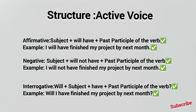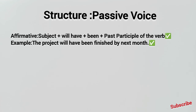Now for passive voice, the first structure is: subject plus 'will have been' plus past participle of the verb. For example: 'The project will have been finished by next month.' Here, the project is the subject in the passive voice.